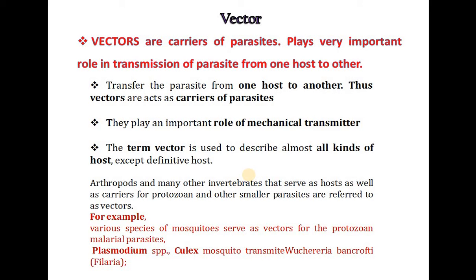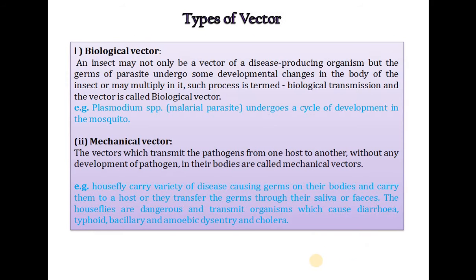Arthropods and many other invertebrates that serve as hosts as well as carriers for protozoans and other smaller parasites are referred to as vectors. For example, various species of mosquitoes serve as vectors for the protozoan malarial parasites — Plasmodium species. The Culex mosquito transmits Wuchereria bancrofti, causing filariasis. Now we will learn the types of vectors.